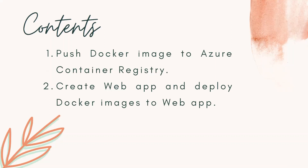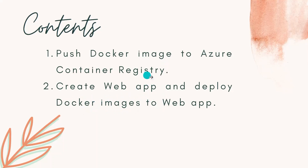So for that, we'll follow these two steps. First, we'll push the Docker image that we have created in our local Windows 10 machine to the Azure Container Registry. And then we'll create a web app in Azure App Services, deploy the Docker image to it, and access the application running in the web app.